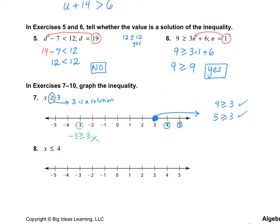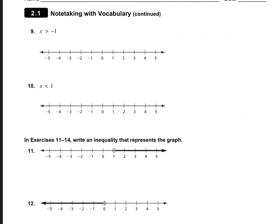You try number 8 on your own. You should have gotten a closed circle at 4 and everything going to the left. Number 9: x > −1. Place the circle at −1. Since it says just greater than, −1 is not a solution, so we keep the circle open and go to the right. Plugging in 5: is 5 > −1? Yes, it works. Plugging in −5: is −5 > −1? No — not part of the solution set, as we can see on the graph.